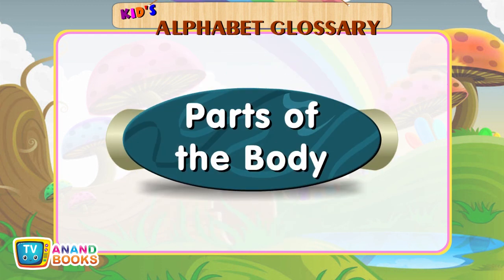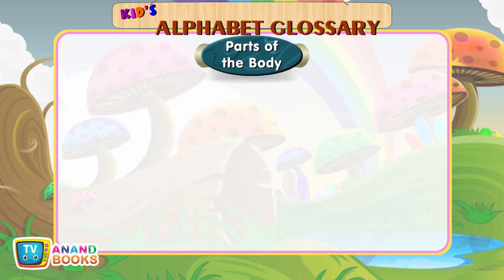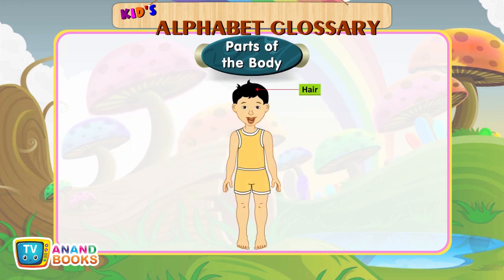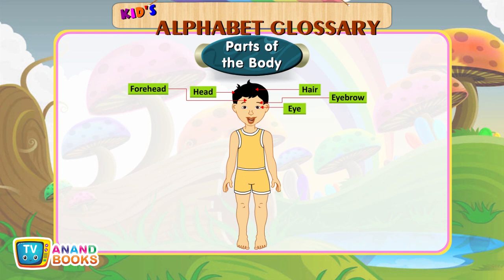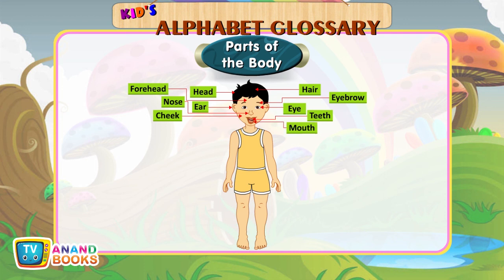Parts of the body. Hair. Head. Forehead. Eyebrow. Ear. Nose. Cheek. Teeth. Mouth. Chin. Neck.